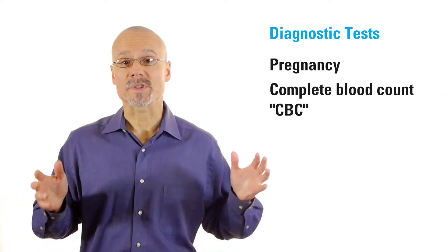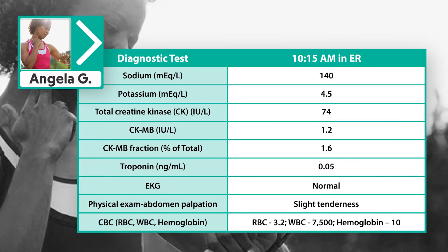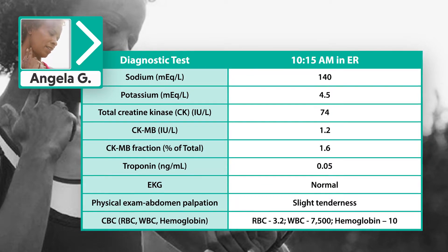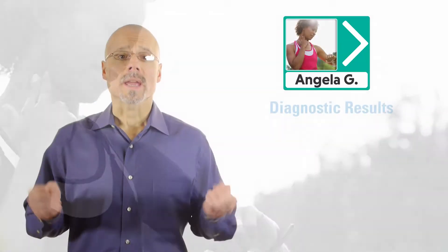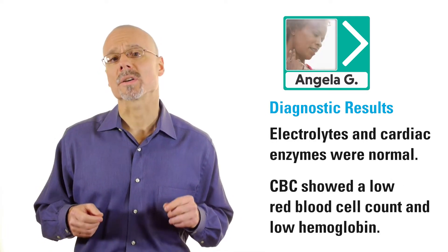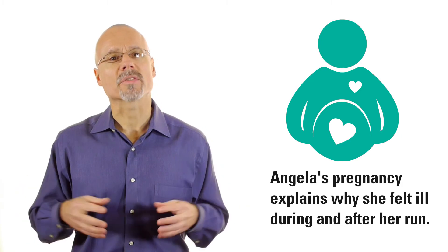A physical exam revealed tenderness in Angela's lower abdomen. The physician ordered a routine pregnancy test, along with tests for CBC, sodium, potassium, and cardiac enzymes. Angela's electrolytes and cardiac enzymes were normal. However, her CBC showed a low red blood cell count and low hemoglobin — so she's iron deficient and anemic. And she's pregnant. Congratulations, Angela. This helps to explain why she felt ill during and after her run.